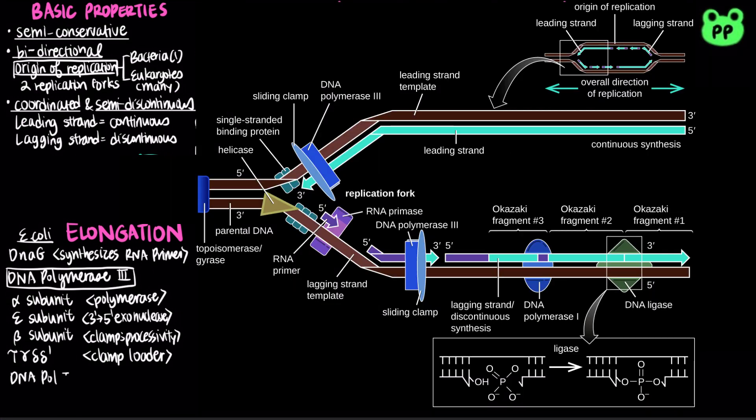After DNA polymerase 1 replaces RNA primer with DNA, there are still gaps known as nicks remain in the phosphodiester backbone. Bacterial replisomes use DNA ligase to seal these nicks.